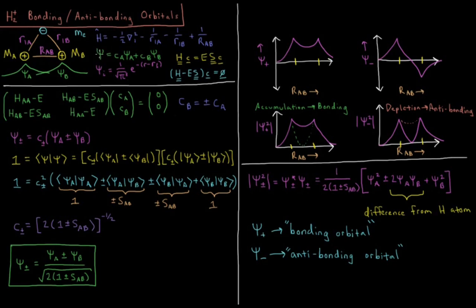Our trial wave function from the previous video was a 1s function placed at each nucleus. The 1s function is 1 over the square root of pi cubed times e to the minus absolute value of R minus the location of that nucleus, peaking at each nucleus. The trial wave function is a coefficient times the 1s on nucleus A, plus a coefficient times the 1s on nucleus B.